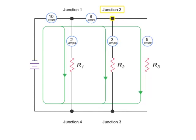As the current returns through junction 3, the 3 amp and 5 amp values recombine to give an amp value of 8. At junction 4, the 2 amps and 8 amps currents recombine to equal the 10 amps of the original source current.